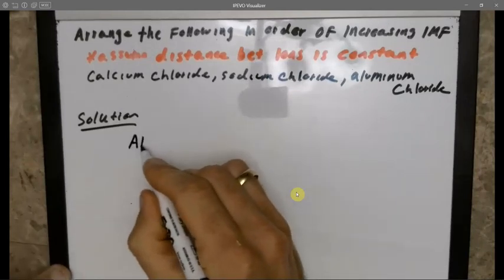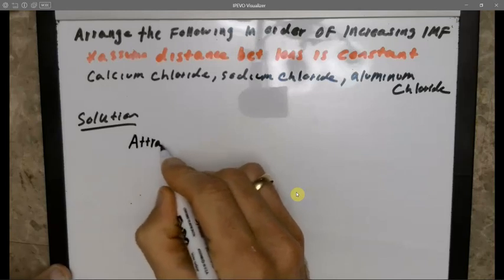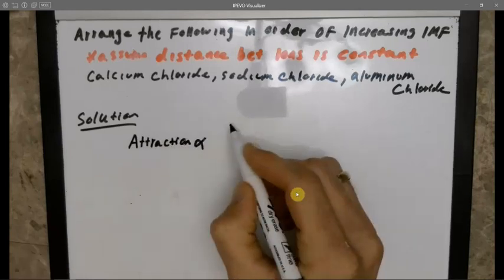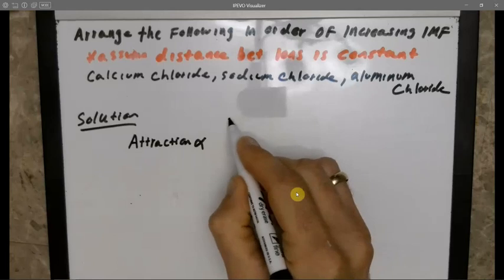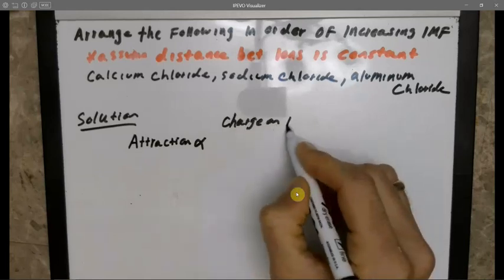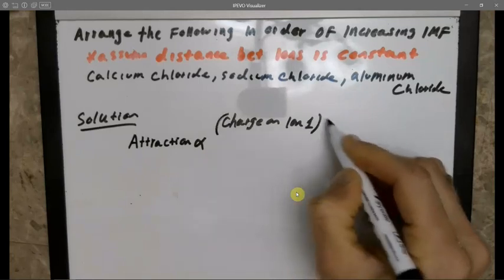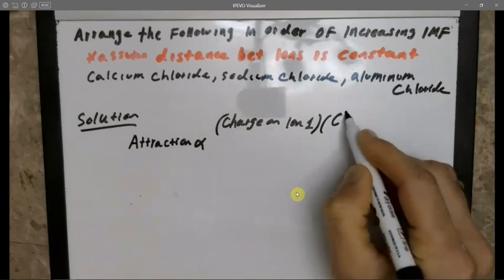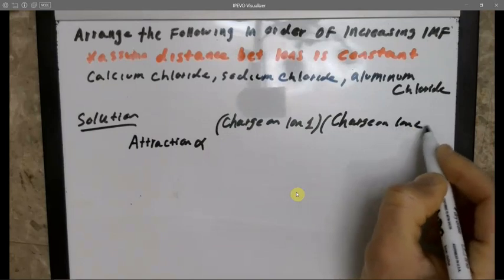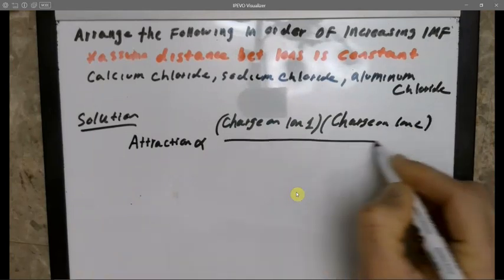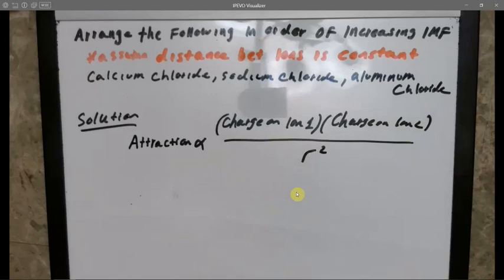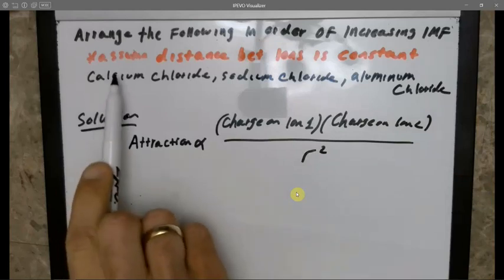We have calcium chloride, sodium chloride, and aluminum chloride, and I want to know which one is the strongest. As a reminder, the attractive force is proportional to the charge on ion 1 times the charge on ion 2 divided by the distance between them squared.